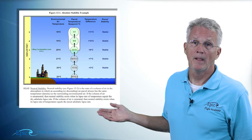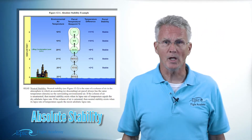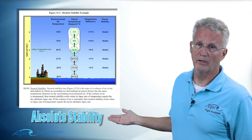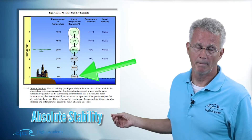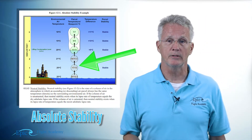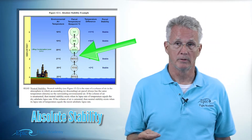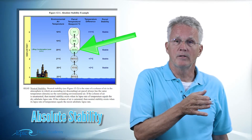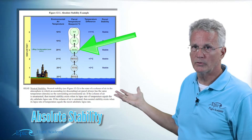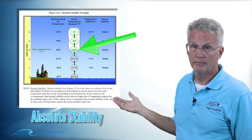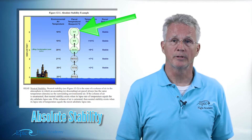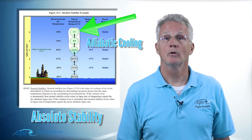This is an example of absolute stability. Notice the air parcel at the surface has a temperature of 20 and a dew point of 12.5. Watch that air parcel rise — the temperature and dew point decrease until we get to 11 degrees temperature and 11 degrees dew point at the base of the cloud. That parcel may continue to rise, and up near the top the temperature is 7 and the dew point is 7. That is adiabatic cooling.